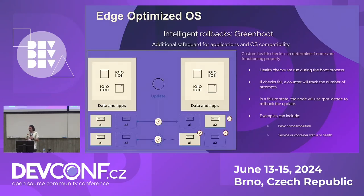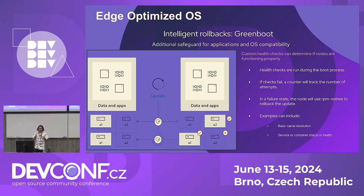For intelligent rollbacks, we have Greenboot — a systemd service that, when the device boots, performs a configurable number of health checks. You can write your own checks — for example, to verify that a certain application is running. If checks fail after a configurable number of attempts, it automatically rolls back to the previous version. You will never end up with a bricked device; we don't want 10,000 paperweights lying around.